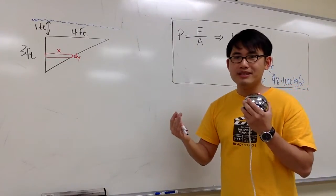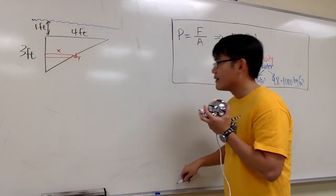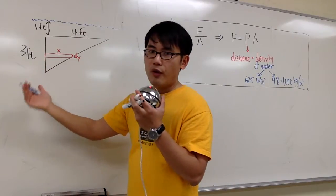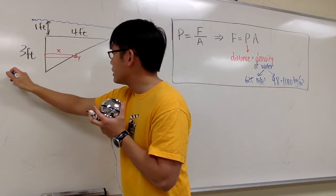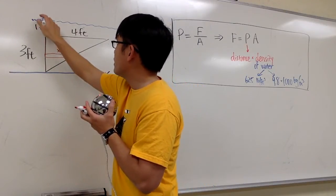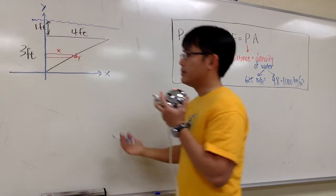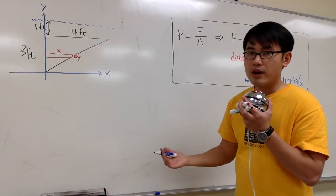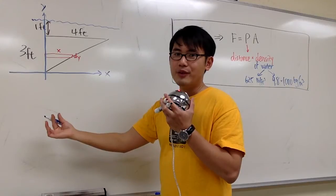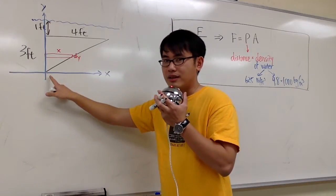We can write down x times dy, but since we are going to use integration, we need to write x in terms of y. The x always changes, so we have to use an equation. I would like to put this line as my x-axis and this one as my y-axis. I'll place the origin right here on the tip of the triangle.